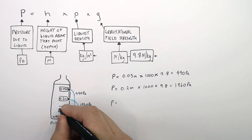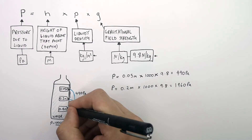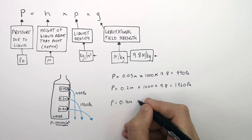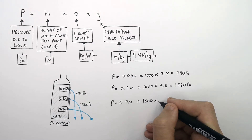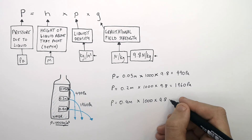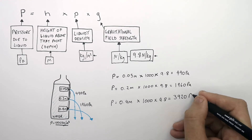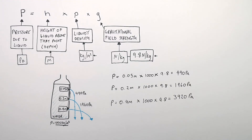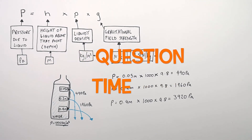The pressure due to the liquid at the bottom hole at a depth of 0.4 metres below the surface: 0.4 metres times by the liquid's density, 1000 kilograms per metres cubed, times by 9.8 newtons per kilogram, the gravitational field strength, which gives a pressure due to the liquid of 3920 Pascals.